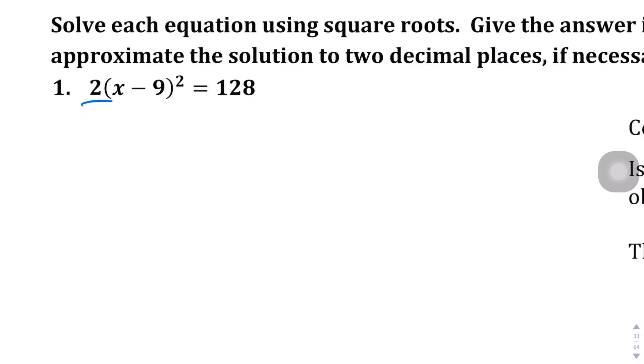So let's divide this whole thing by 2 and that by 2 as well. And we're going to get x minus 9 squared equals 64, right?